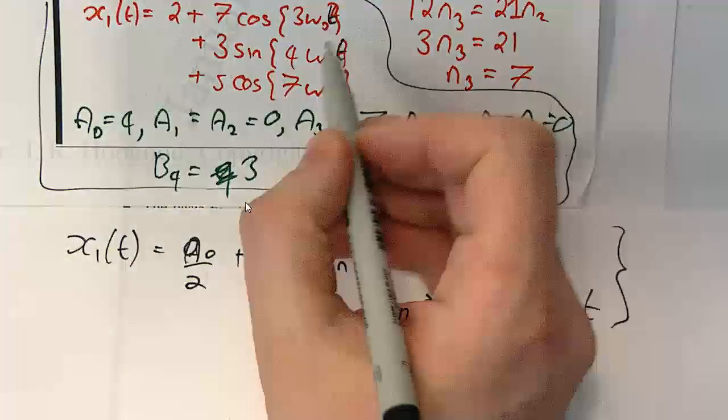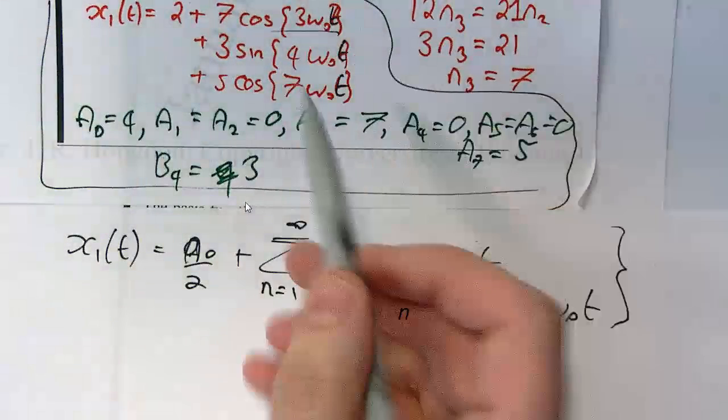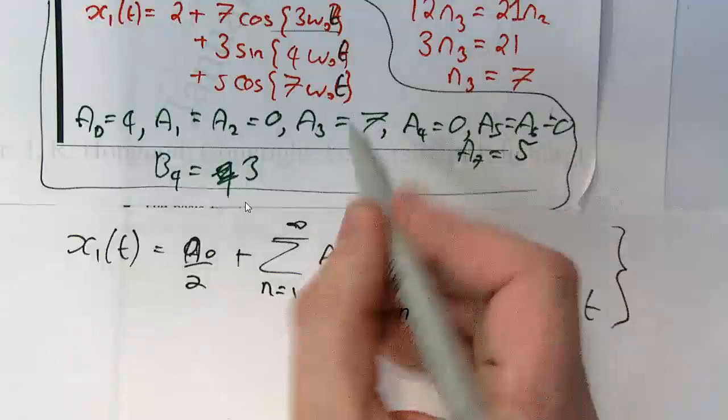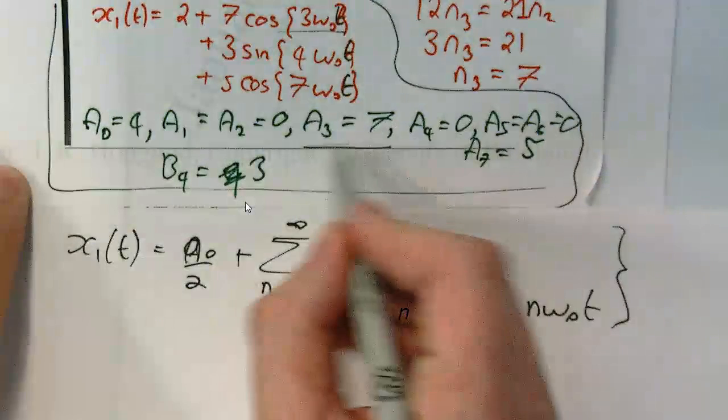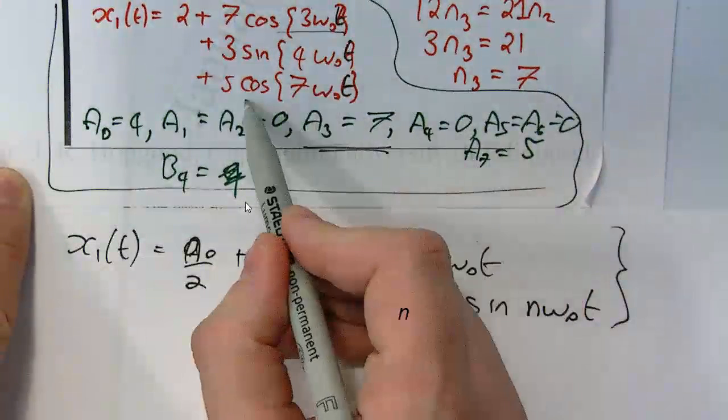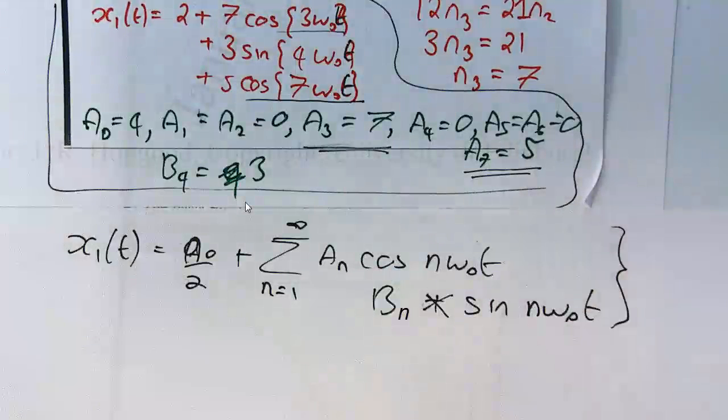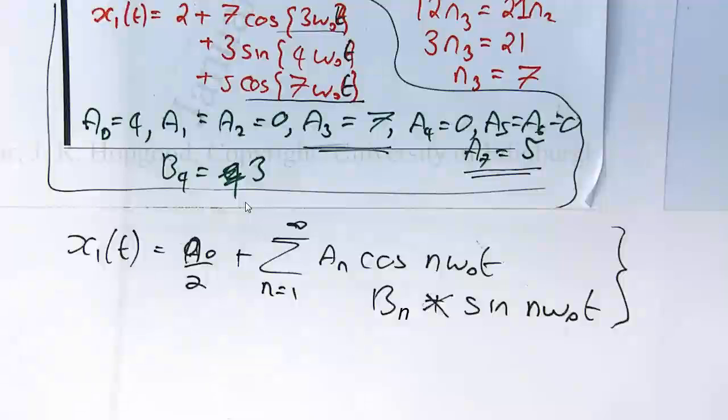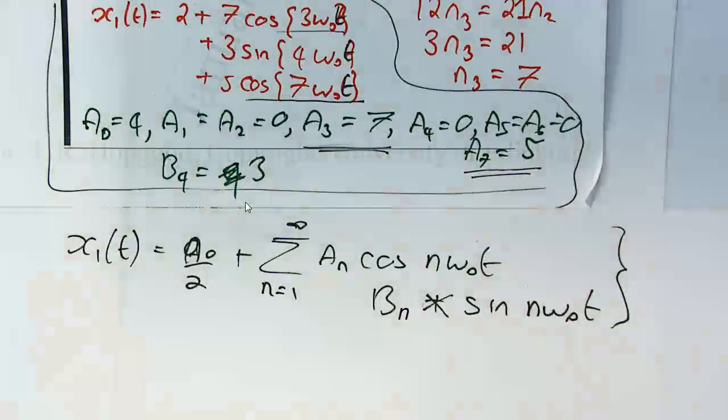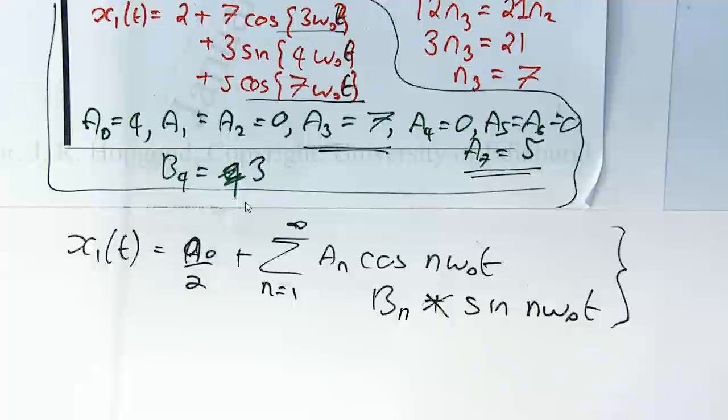Apart from the third and the fifth harmonic. So that's the third harmonic, where the amplitude of the coefficient was 7, so that's why A3 is equal to 7. And the seventh harmonic, where we had A7 equal to 5, they're the only harmonics for the cos terms that are non-zero. And similarly, the only sinusoidal harmonic which is non-zero is the fourth harmonic, so B4 is equal to 3, and Bn is 0 otherwise.